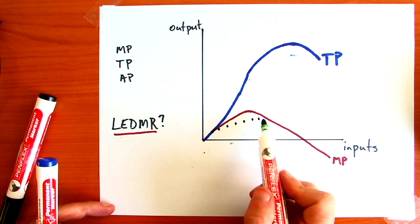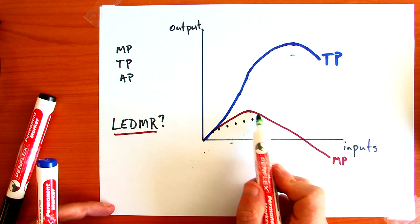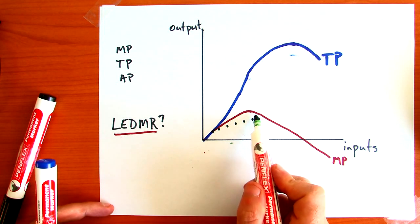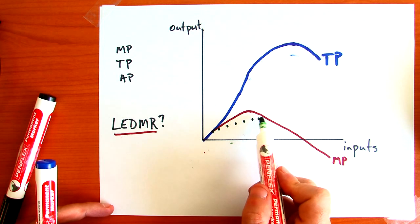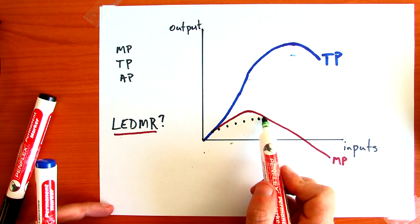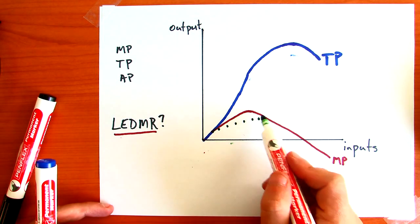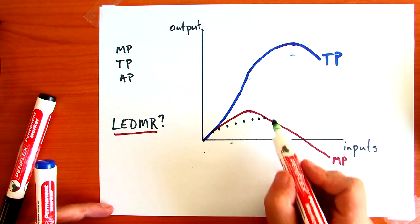The reason for that is that even though marginal production is falling, it's still higher than what average was. Therefore, we're adding a higher number to the average, and the average is going to go up. This continues to happen until marginal production intersects average production,